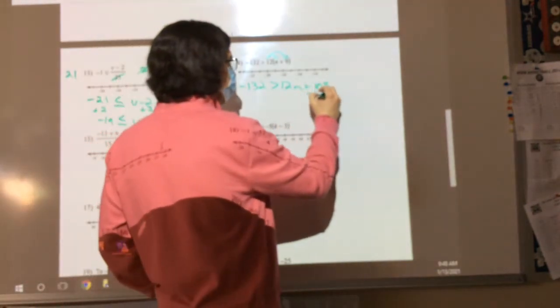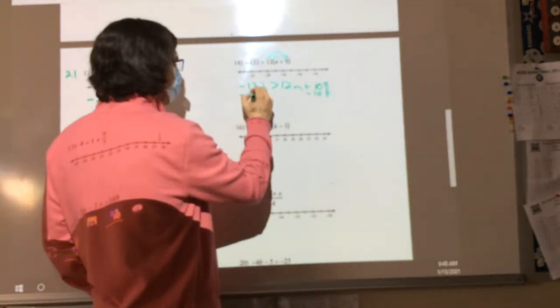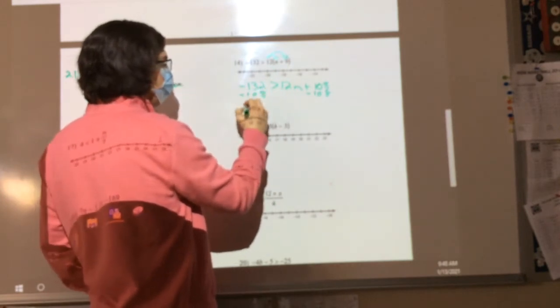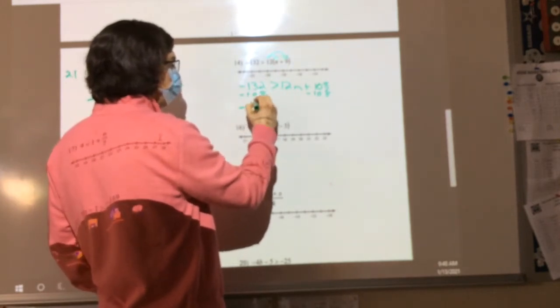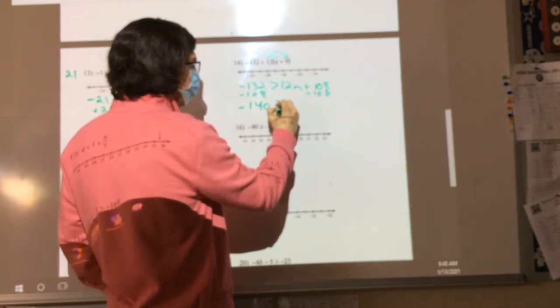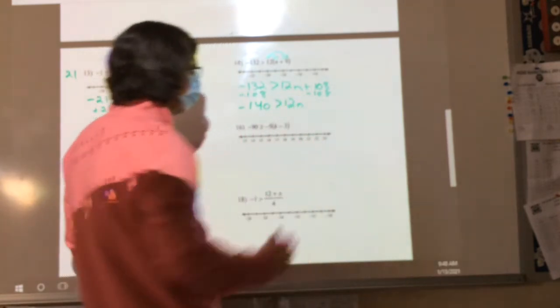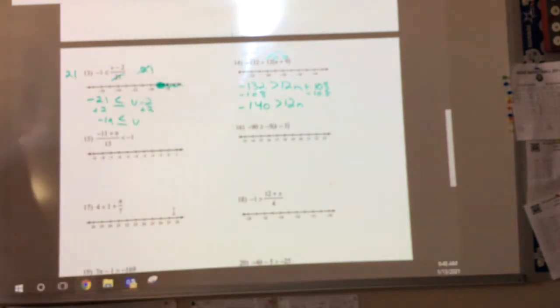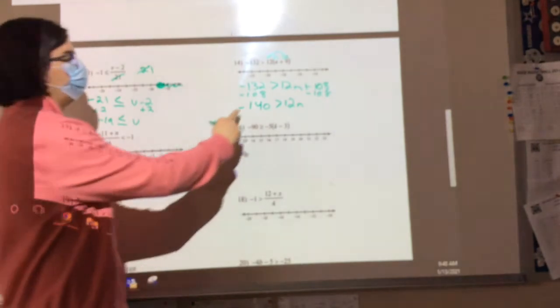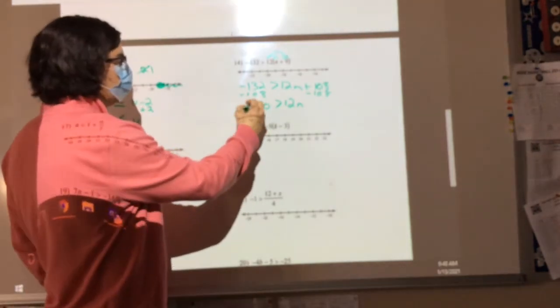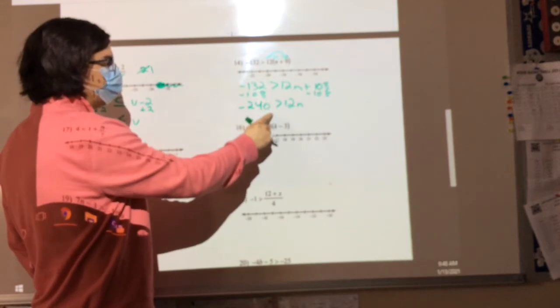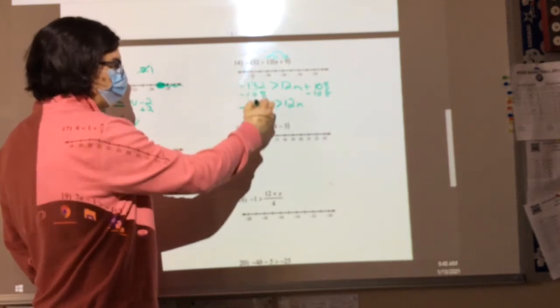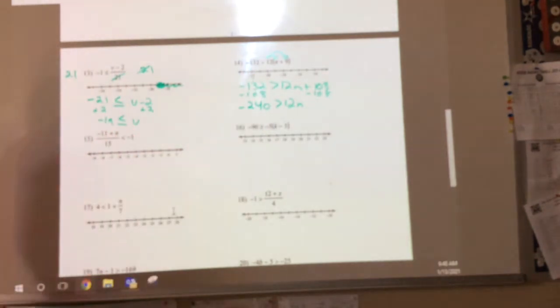We're going to subtract 108. And when I do that, I'm going to end up with negative 140, which is greater than positive 12n. Can I make 2, 3? Not 1, 3? I think you're right. Negative 240. My apologies. 8 and 2 is 0. Okay, I have my 1, 3, and... Yep, negative 240. Okay Mariah, what's next?